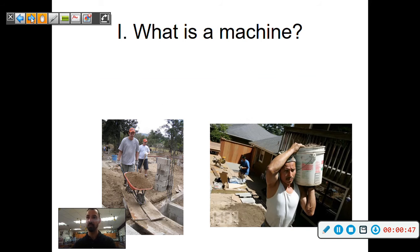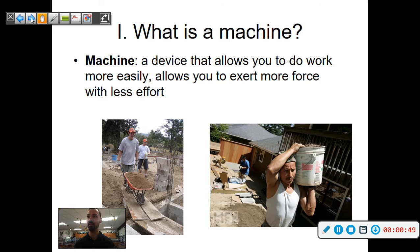So what is a machine in general? A machine is a device that allows you to do work more easily, allows you to exert more force with less effort. So an example: if we have to carry some dirt, dead lifting like the guy on the right, dirt will be very heavy carrying bucket after bucket after bucket.